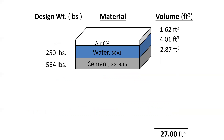Our goal in ACI 211 mix design is to fill a box — one cubic yard, which is 27 cubic feet. Once we have our known air content, water, and cement, we can calculate their volumes. For example, for cement: take 564 pounds, divide by 3.15 (specific gravity), then divide by 62.4 (unit weight of water in pcf) to convert from weight to volume. In this example you get 2.87 cubic feet. We keep filling the box — next is coarse aggregate, then fine aggregate, which we treat as a filler.